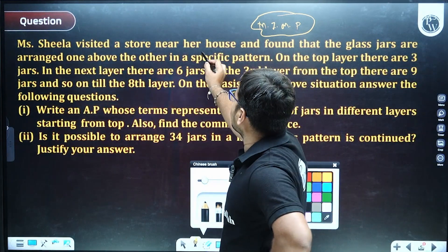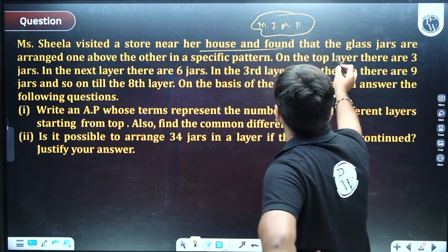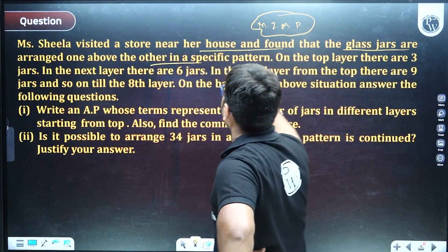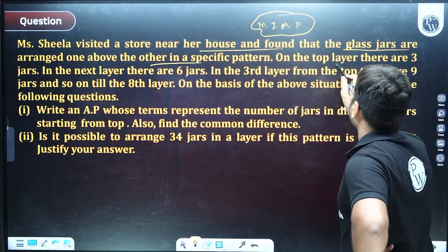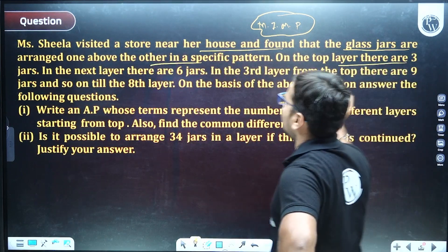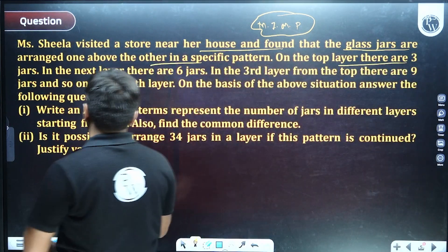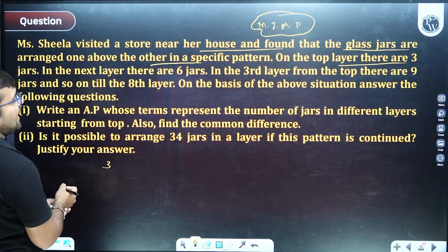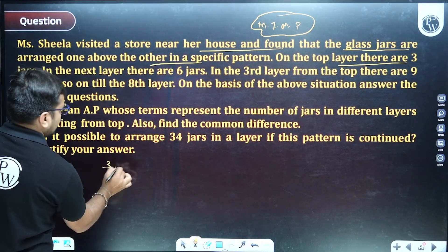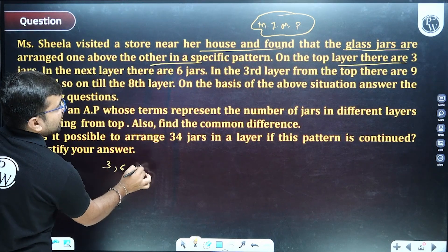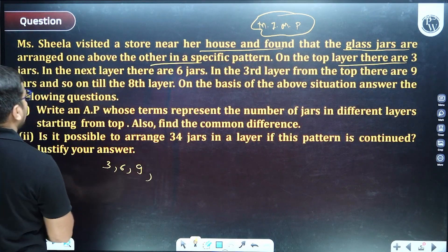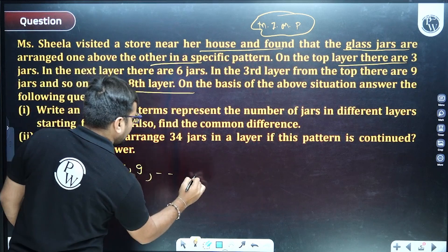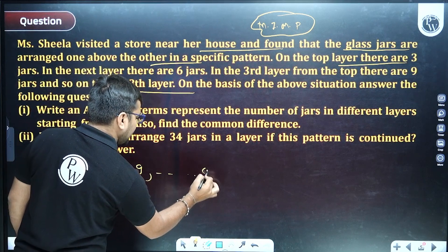The next question: Sheila visited a store near her house and found glass jars arranged one above another. On the top layer there are 3 jars, the next layer has 6 jars, then 9, continuing up to the eighth layer.